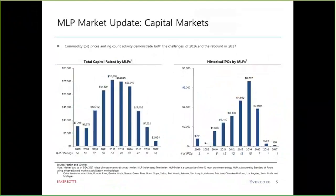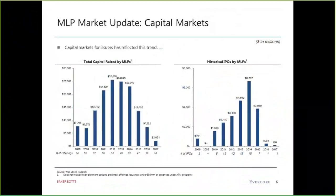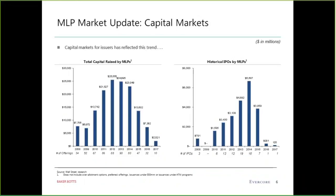Capital markets have reflected this trend. We peaked in 2012 through 2014 in all capital raised by MLPs — both debt and equity. Looking at the IPO market, we peaked in 2014 with 18 MLPs, followed by seven in 2015 and only one last year, Noble Midstream, and one Royalty Trust this year so far. But we do see more activity and MLPs on file.